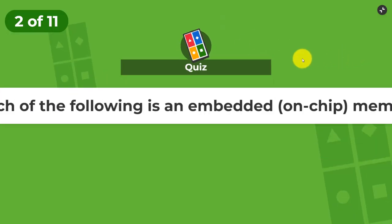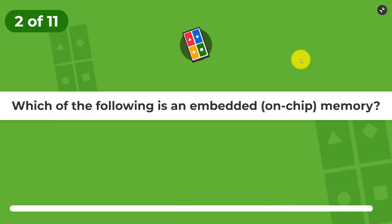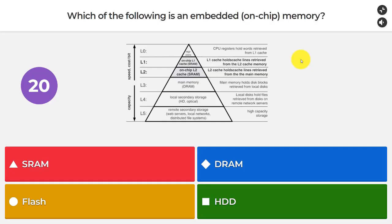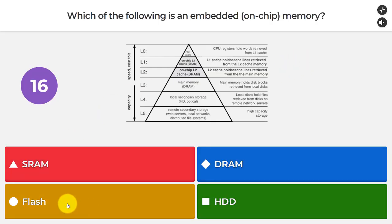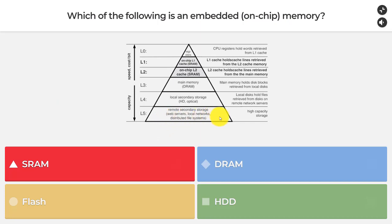Question number two: which of the following is an embedded on-chip memory? SRAM, DRAM, Flash, or HDD (hard disk drive)? The answer is SRAM.